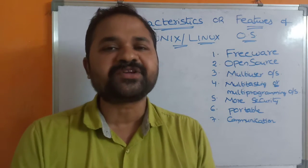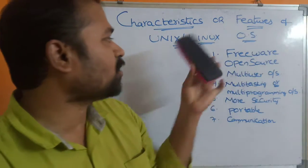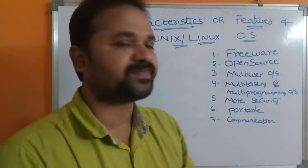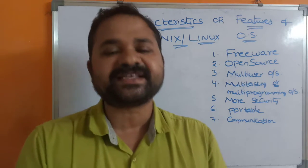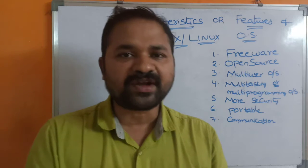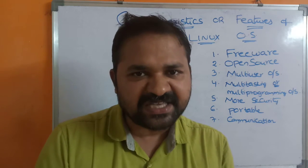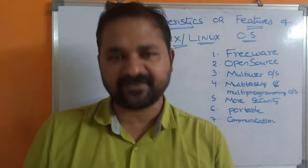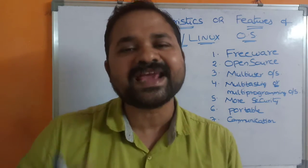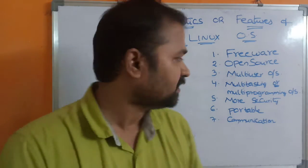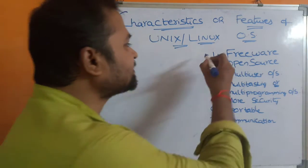In this video we are going to discuss about characteristics or features of Unix or Linux operating system. We have seven features. An operating system is an interface between user and computer hardware. Without installing an operating system we cannot do any activity in the computer. Let us see all the features one by one. The first one is free.